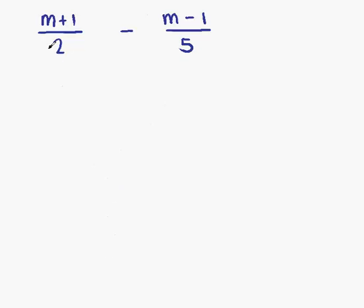Example 2. We have m plus 1 over 2 minus m minus 1 over 5. Like the previous question, we found that in order to proceed, we must have a common denominator. The quick way of doing that was just to multiply each fraction by the opposite denominator.